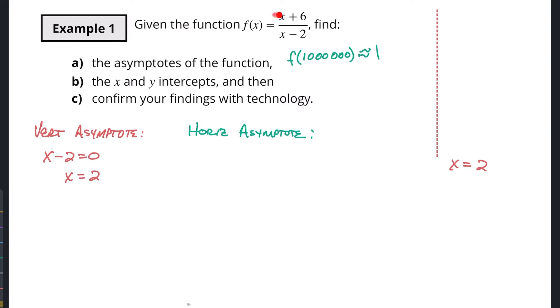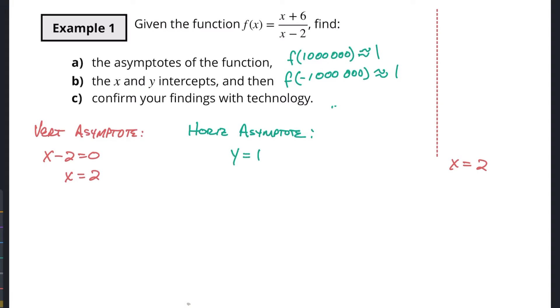The same idea applies for very large negative numbers. If you're $10 billion in debt and someone adds $6 to that debt, or gives you $6, it doesn't change anything significantly. So with a large negative number in numerator and denominator, we again get a negative over a negative, which approaches 1. Therefore our horizontal asymptote is y = 1. This function will approach but never reach the value of 1 — always approaching from above or below, but never equaling 1.